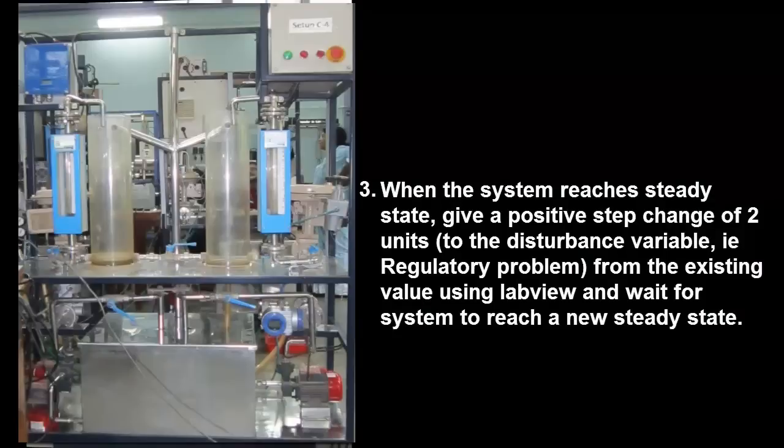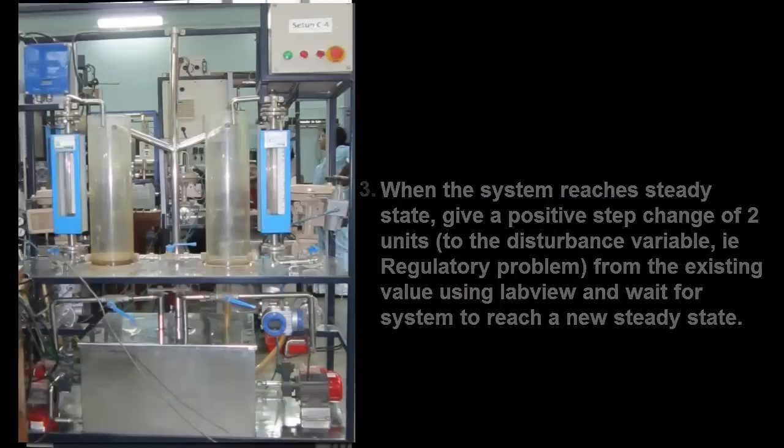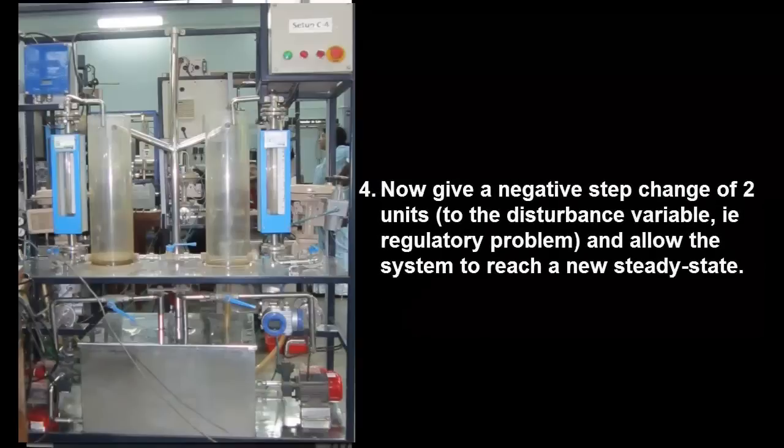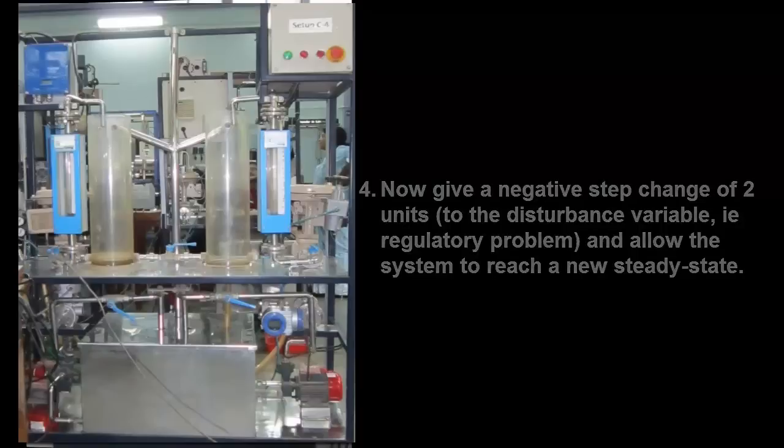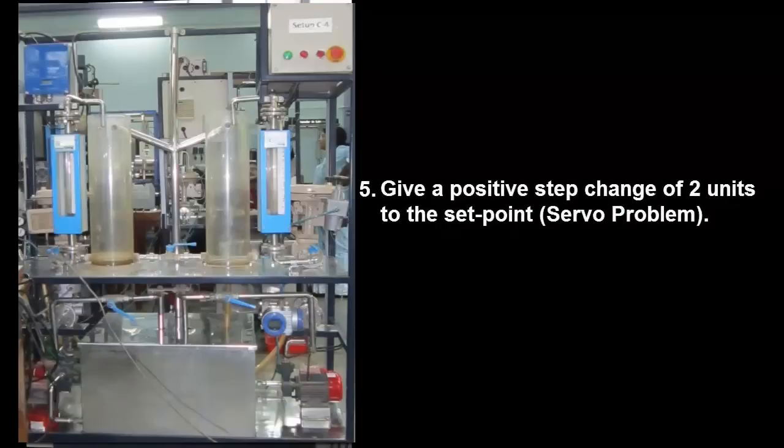When the system reaches steady state, give a positive step change of two units from the existing value using LabVIEW and wait for the system to reach a new steady state. Now give a negative step change of two units and allow the system to reach a new steady state. Please note that the effect of the step changes on the instantaneous height is being saved as values in the text file you had selected at the start of the procedure.